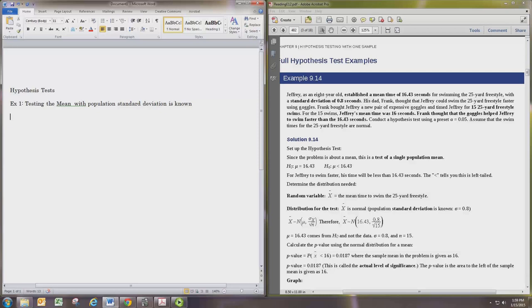For the 15 swims Jeffrey's mean time was 16 seconds. Frank thought that the goggles helped Jeffrey to swim faster than the 16.43 seconds. Conduct a hypothesis test using a preset alpha equals 0.05.